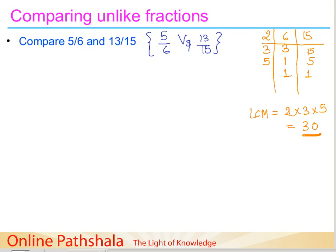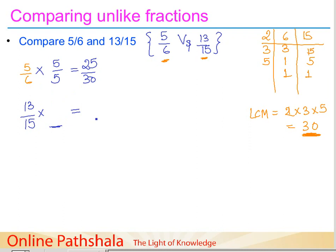Now we need to multiply both fractions so their denominators become 30. For the first fraction 5/6: since 6 times 5 is 30, we multiply both numerator and denominator by 5, giving us 25/30. For the second fraction 13/15: since 15 times 2 is 30, we multiply both numerator and denominator by 2, giving us 26/30.